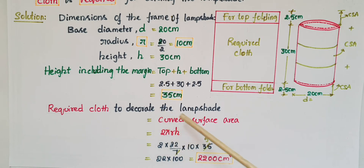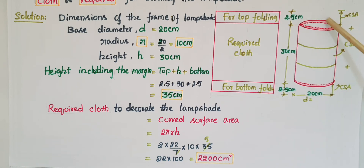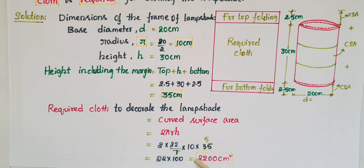The required cloth to decorate the lampshade equals the curved surface area, because we should not include the top and bottom areas — the cloth is needed only for the curved surface and the folding margins. That is equal to 2πrh = 2 × (22/7) × 10 × 35 = 2200 square centimeters. So 2200 cm² is the required cloth to decorate the lampshade.